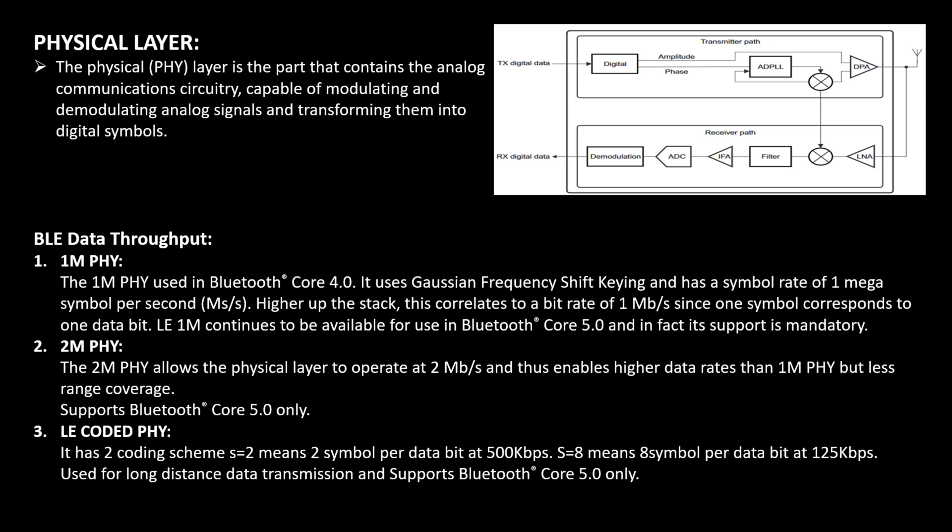Coming to BLE data throughput — it means at what rate or speed you can send data in BLE. There are three configurations: 1M PHY, 2M PHY, and LE Coded PHY. 1M PHY sends data at the rate of 1 Mbps. In Bluetooth terms, a bit per second is also called a symbol per second. This configuration is supported from Bluetooth version 4.0.